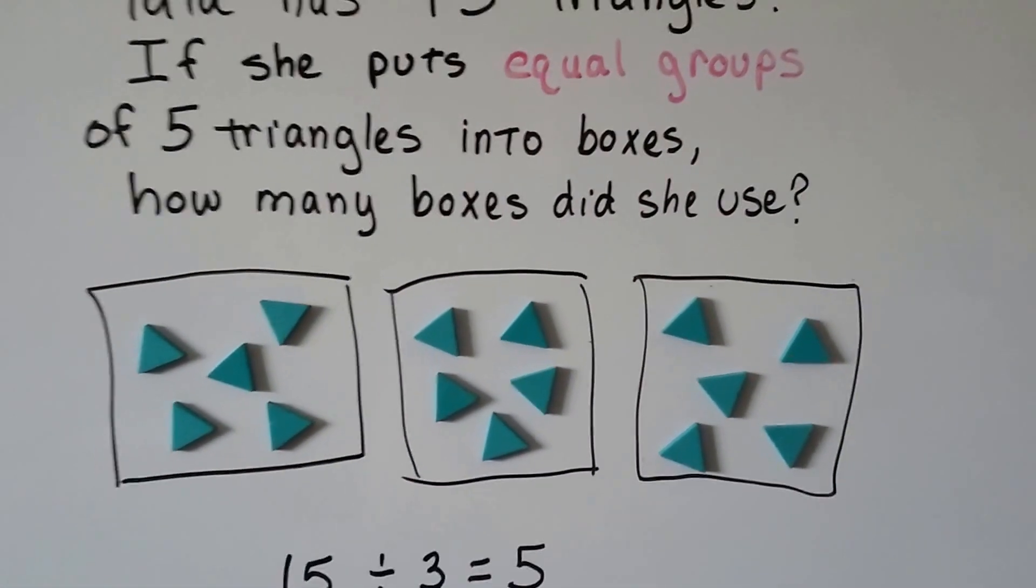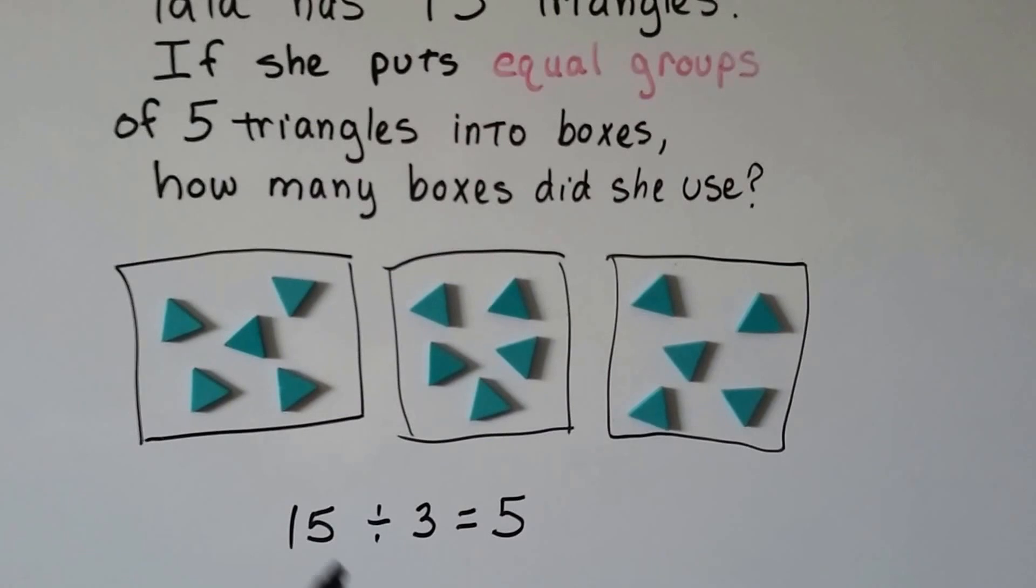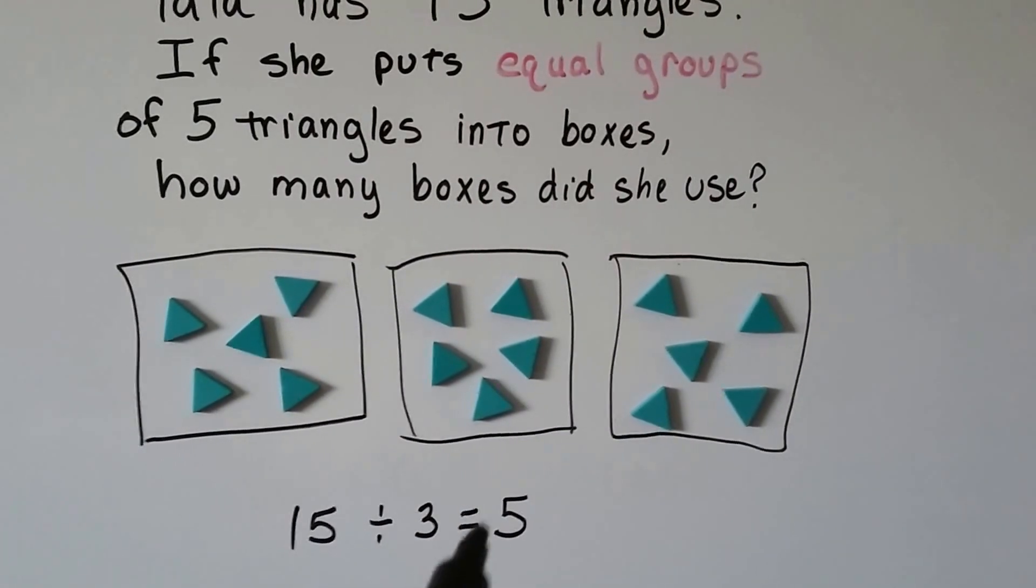So now she's got five triangles in each box. How many boxes did she use? Three. Fifteen divided by three equals five.